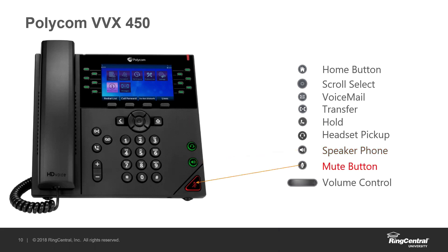Right below that we have the mute button. That's going to mute your audio. If you need to say something privately to somebody around you, you can press that mute button and it will light up red to show your audio is muted. Press it again to unmute yourself. On the left side of the phone, we have the volume control. When the phone is idle, it adjusts the ringer volume. When you're on an active call — whether through the handset, speakerphone, or headset — that volume control adjusts the volume of the active call.